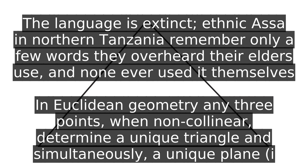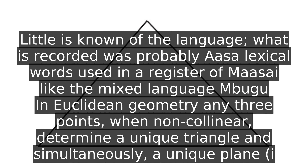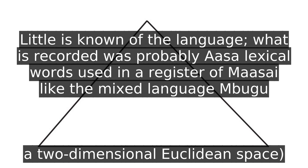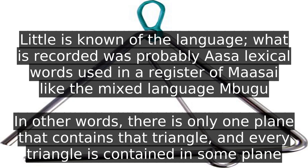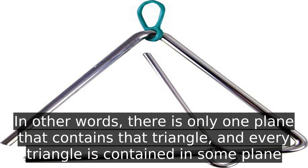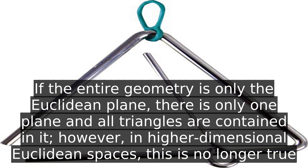In Euclidean geometry, any three points, when non-collinear, determine a unique triangle and simultaneously a unique plane, i.e. a two-dimensional Euclidean space. In other words, there is only one plane that contains that triangle, and every triangle is contained in some plane.